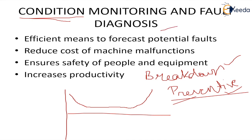Condition monitoring and fault diagnosis is quite an efficient method because it reduces cost — we are not unnecessarily replacing components. It also increases productivity and ensures the safety of equipment, because at certain intervals we are measuring running conditions. If there is any onset of failure or any undesirable feature in the system, we can take measures immediately and stop the problem from progressing further.